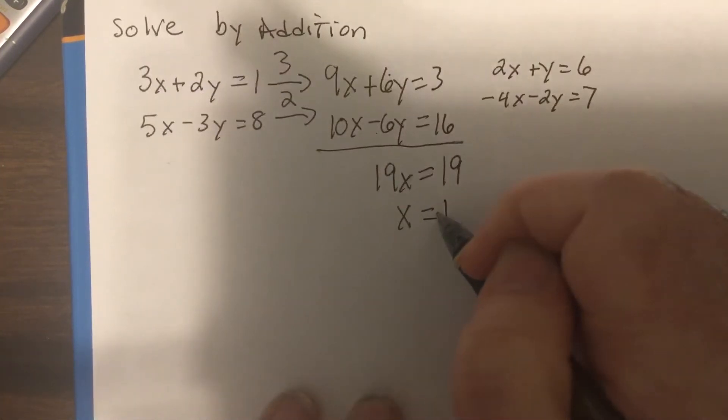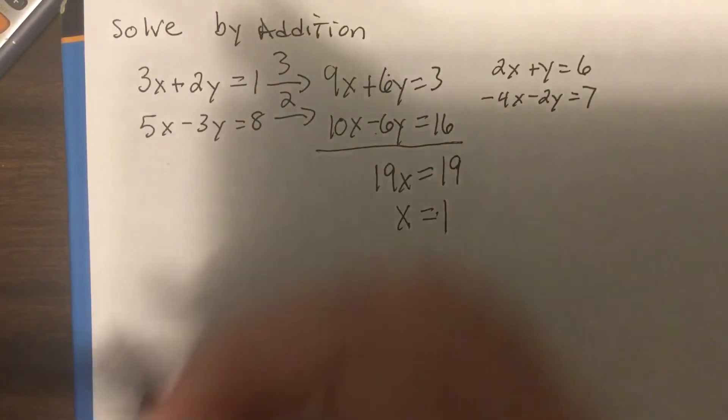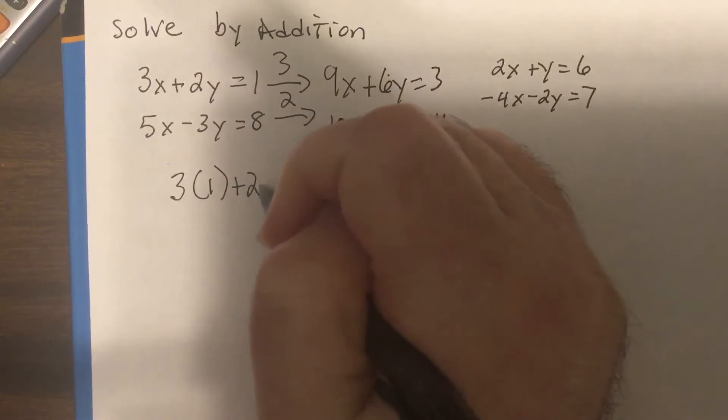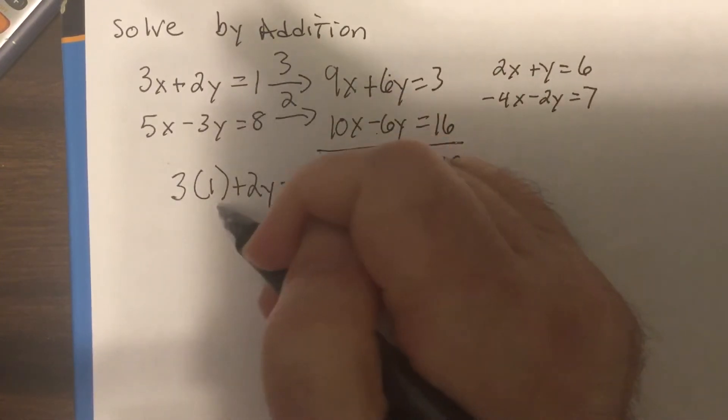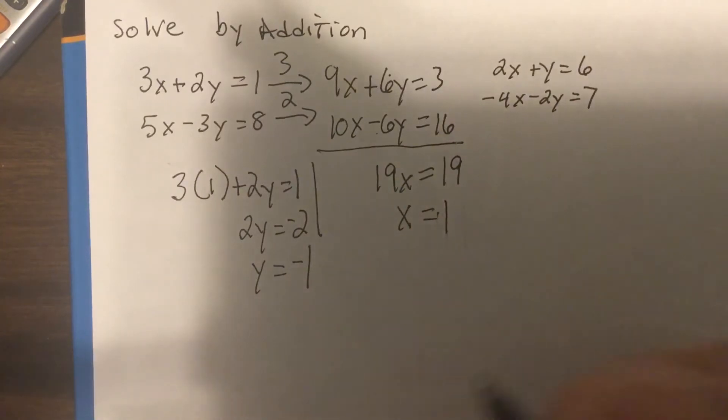Now I'm going to plug that back in to either here or here to find y. So I'm going to do it into the first one. It's 2y equals 1. So subtract 3. I have 2y equals negative 2. So y equals negative 1. So it'd be 1, negative 1.